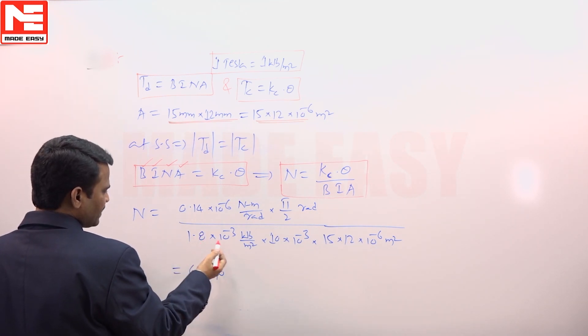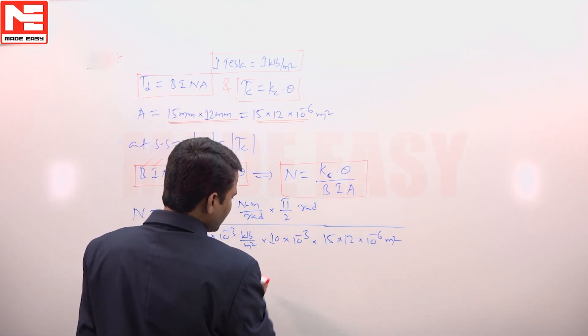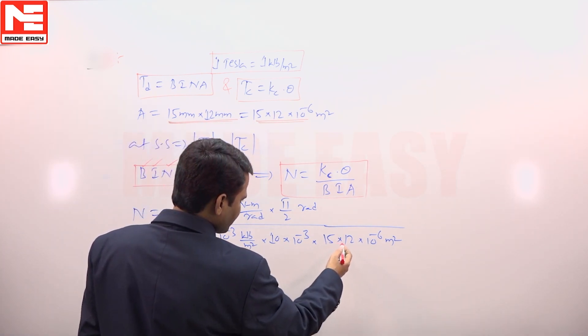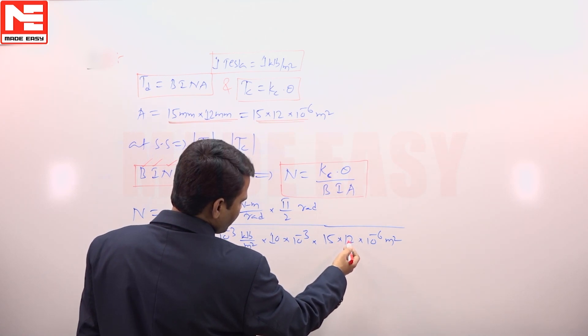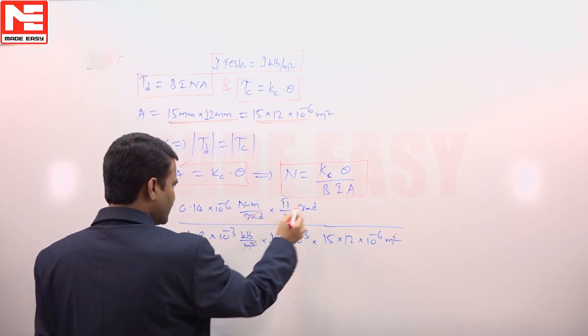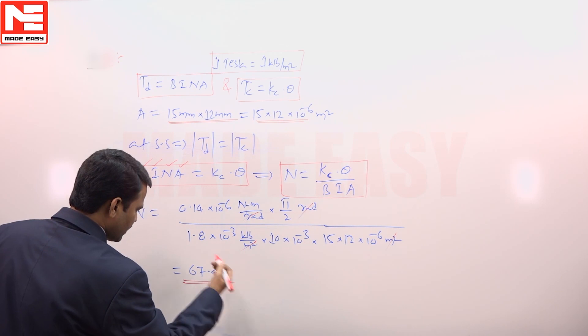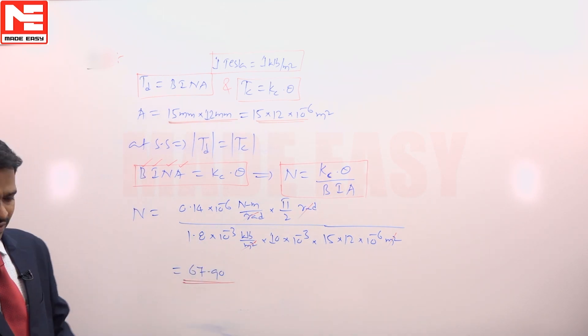B value 1.8 into 10 to the power of minus 3 Weber per meter square. Current 10 milli amperes, area of cross section of the coil 15 into 12, 10 to the power of minus 6 meter square. Meter square meter square cancel here, radian radian also cancel. If you have done the calculation, 67.90 number of turns of the coil.